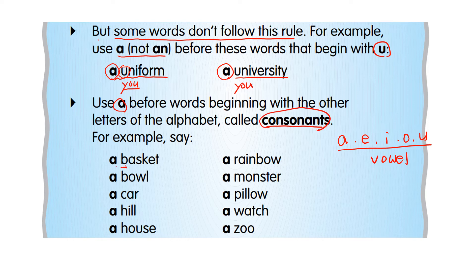Here, basket, a basket. Bowl, a bowl. Car, a car. Hill, a hill. House, a house. A rainbow. A monster. A pillow. A watch. A zoo.